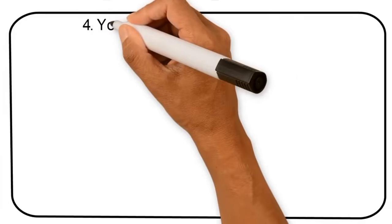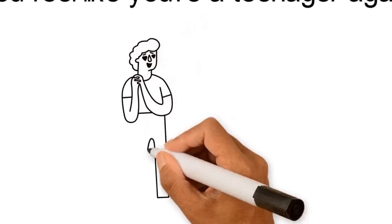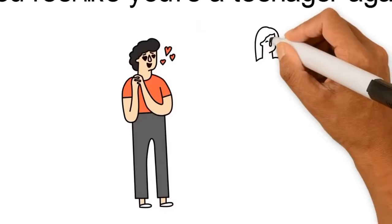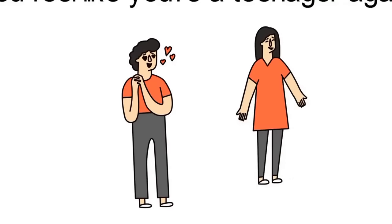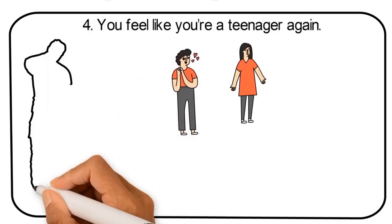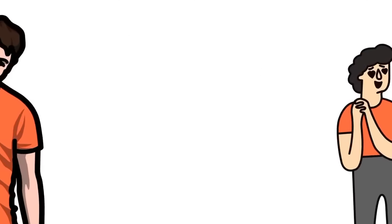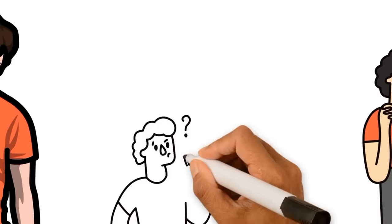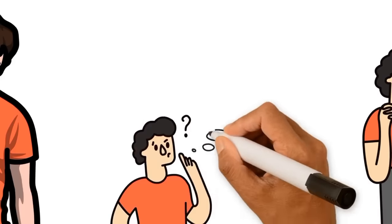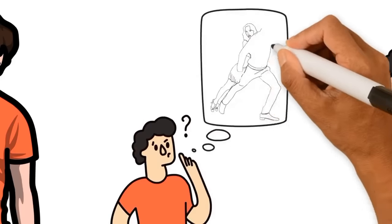Number 4, you feel like you're a teenager again. When you see them, you might well lose your cool, even if only on the inside, and start acting like the nervy teenager you thought you'd left behind in high school. This person has you acting a little bit crazy and you're not sure what to do or what to say and feel like you keep putting your foot in it.